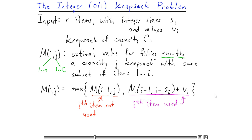And this quantity represents the optimal way to fill up a knapsack of exactly capacity j such that I use the ith item. Because in this case, I have to fill up a capacity j minus si knapsack optimally using some subset of the first i minus 1 items. And then I can add in the ith item, in which case I get an additional vi value.